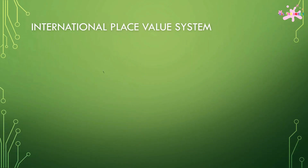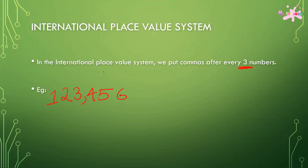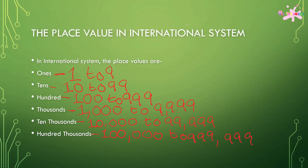The international place value system. In the international place value system, we put commas after every three numbers. For example, 123,456. The place values in the international system follow this same grouping pattern.